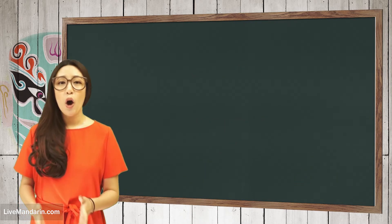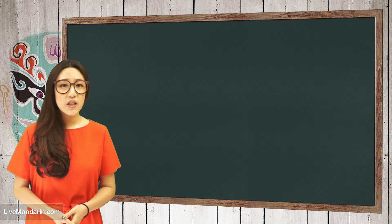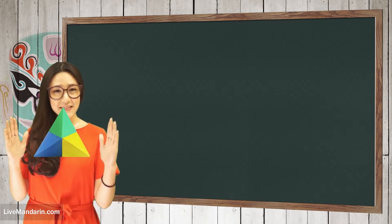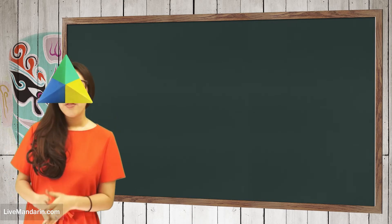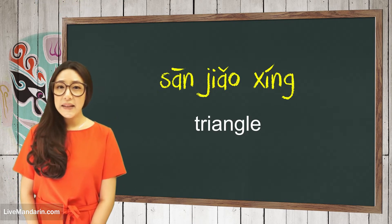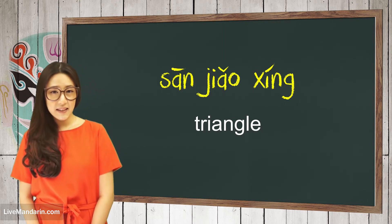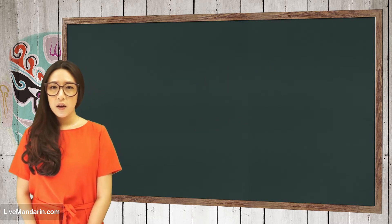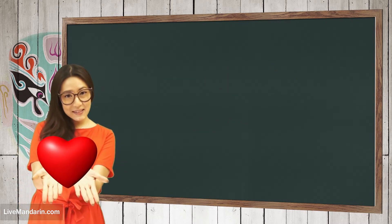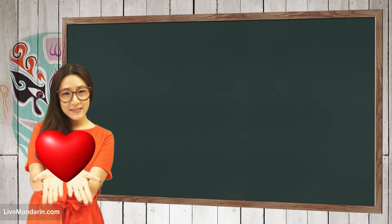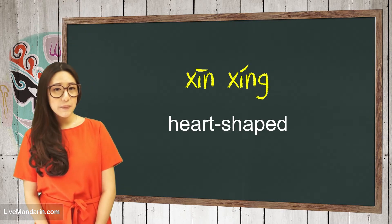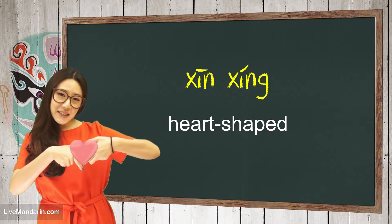Okay, what shape is this? This is triangle — 三角形. How about this? This is heart shape — 星形.